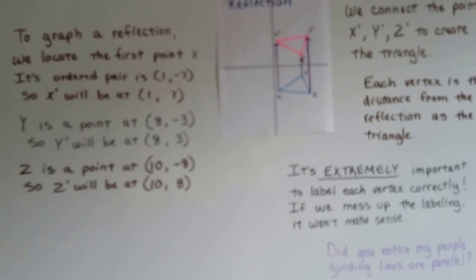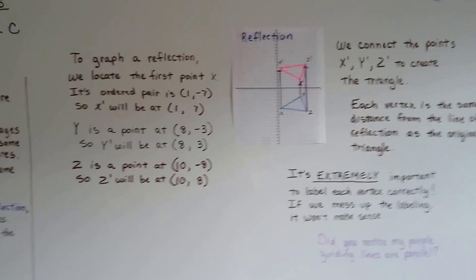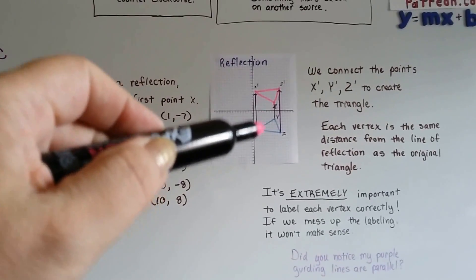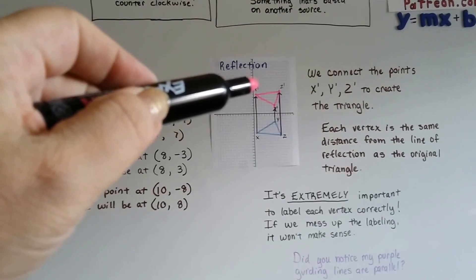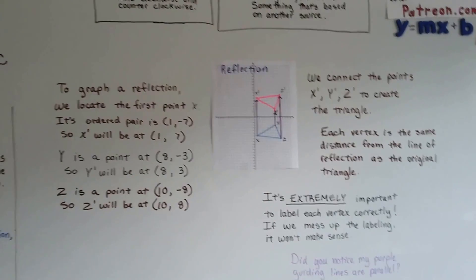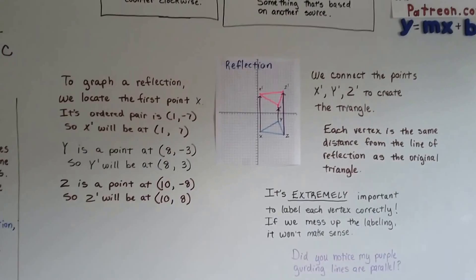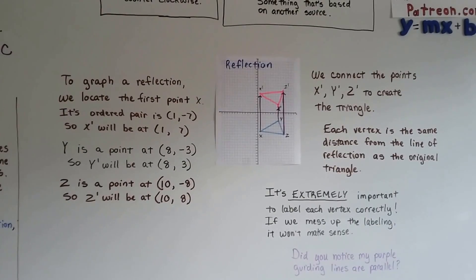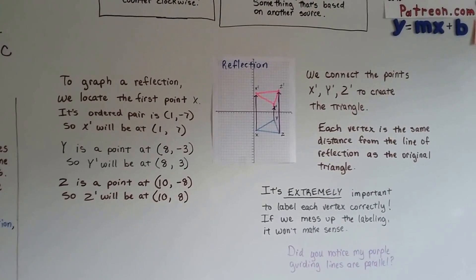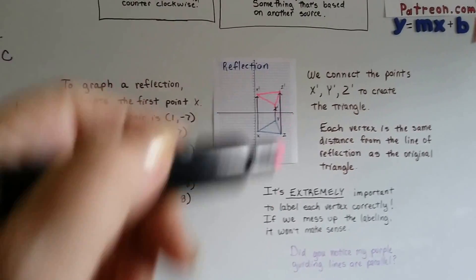So that's how we graph reflections. We just find the point and put it at the opposite point on the grid across the line of reflection. It's extremely important that we count the spaces and make sure we're the same distances for each point.